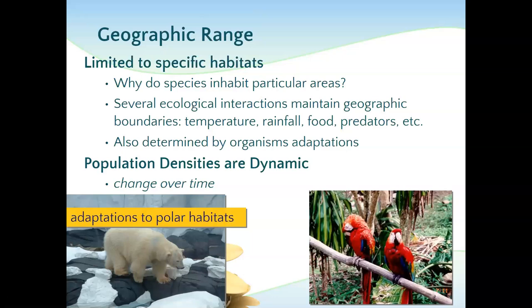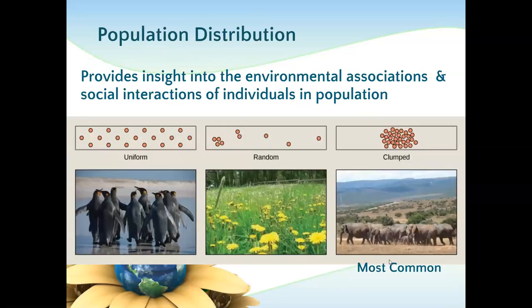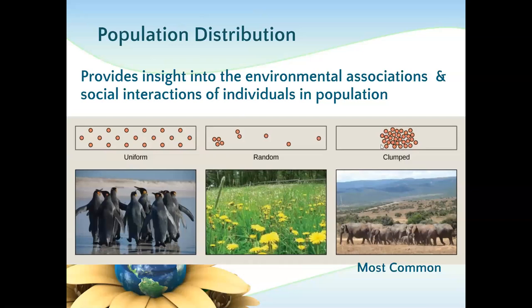Animals in a tropical humid area need a totally different set of adaptations and have a plethora of organisms to choose from. So the other thing we look at is population dispersion. On the worksheet, you have some population density graphs. Uniform — they're kind of equally dispersed. Random — there's no particular pattern. And clumped — they're found in a small group, like your herds.